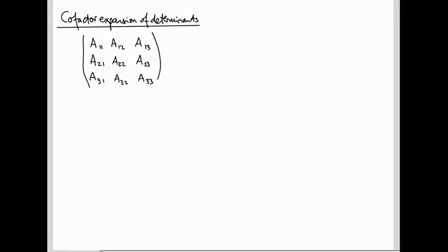Let's recall what I said the determinant was. You pick something from every row in such a way that no two things are in the same column. Then you multiply together the n things you've chosen and stick a sign in front. So it's things like A11 from the first row, A22 from the second row, and A33 from the third row — that will be a valid choice.